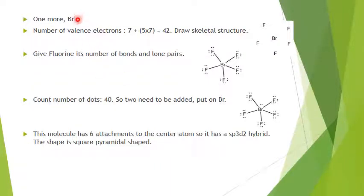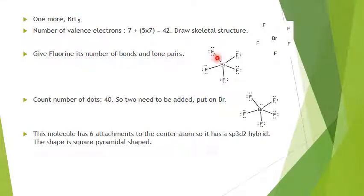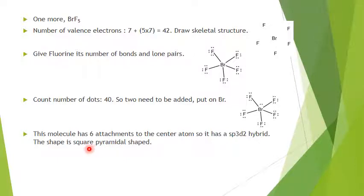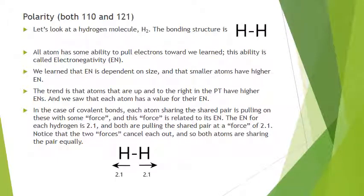Now bromine pentafluoride, BrF₅. Number of valence electrons: 7 + 5×7 = 42. Draw the skeletal structure; give each fluorine one bond and three lone pairs; count up — you get 40, so you need two more electrons; put them on the bromine. Count the connections on bromine — there are six attachments, so the hybrid is sp³d² (one s, three p's, two d's) and the shape is square pyramidal.